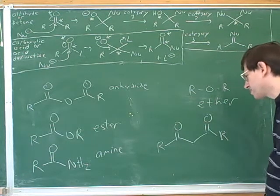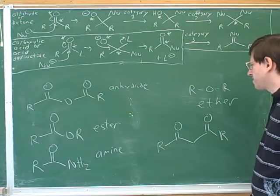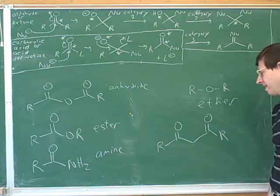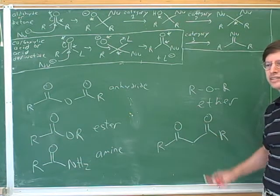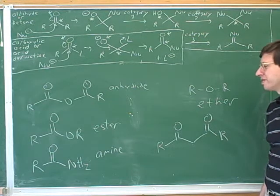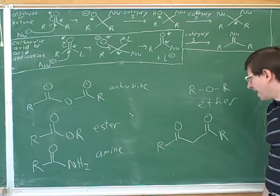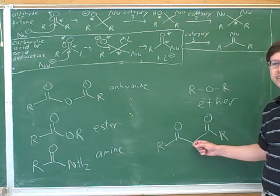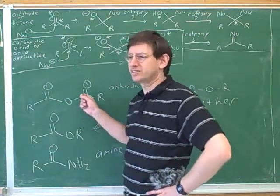I guess we could add a Baeyer-Villiger, although I'm not sure where it would add in this case. I don't think we ever covered adding an oxygen to a diketone, so I really don't know how Baeyer-Villiger would react here. And even if you did add an oxygen, it wouldn't be an anhydride because there would still be a carbon in the middle. The anhydride has to be carbonyl-oxygen-carbonyl.